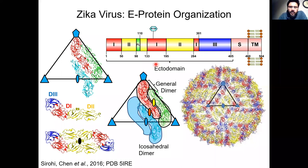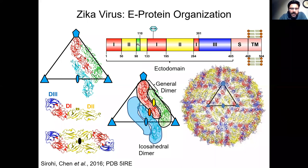Shown here is a schematic of the Zika virus E-protein sequence. There is a large ectodomain consisting of three smaller domains: domain 1 colored in red, domain 2 colored in yellow, and domain 3 colored in blue. This large ectodomain is followed by a short stem domain and a transmembrane domain, which lies in the internal lipid membrane of the virus. In the fully folded form, domain 1 lies at the center whereas domains 2 and 3 lie at opposite ends.